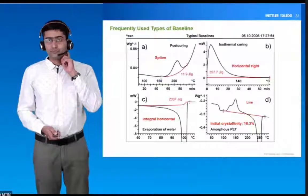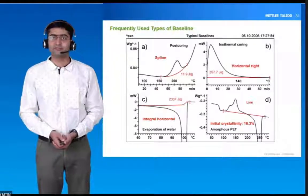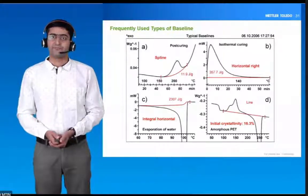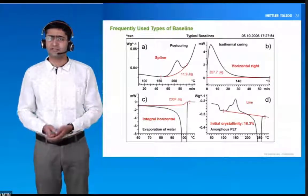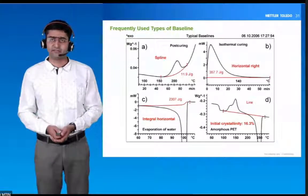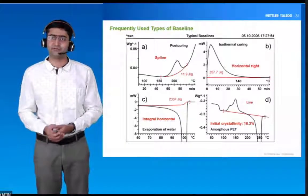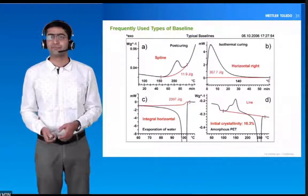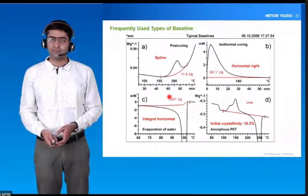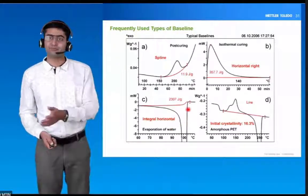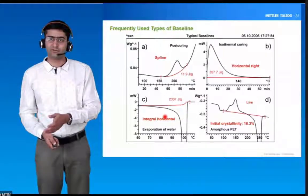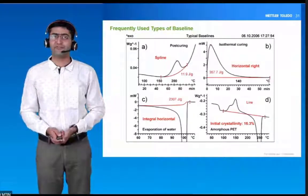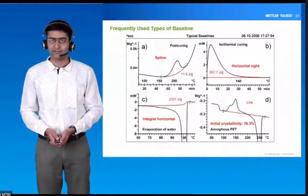Now, choosing the baseline. There are various possibilities for selecting the baseline: spline, horizontal right, integral horizontal, or straight baseline. In the first example, it was a post-curing measurement of a sample, and because of the change in CP, the baseline is shifting towards the higher side. In another case, you can see evaporation — during evaporation, the sample mass is reducing, and because of the loss in sample mass, the baseline shifts towards the higher side. Depending on this kind of observation, you have to select an appropriate baseline.